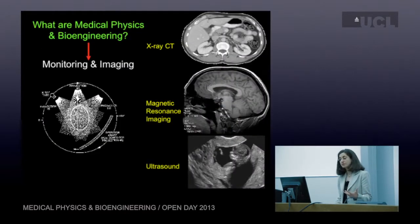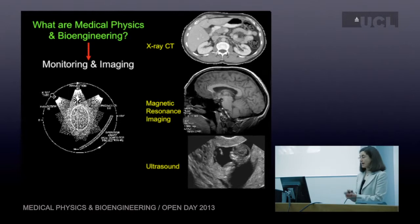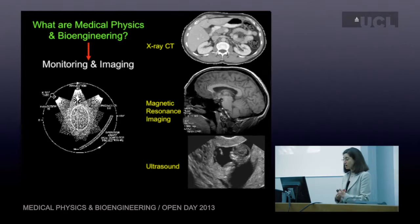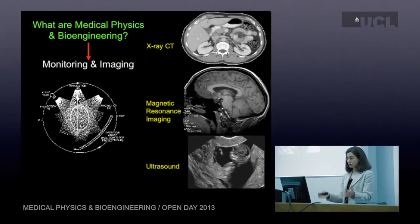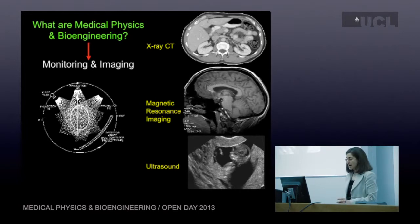Medical physics and bioengineering involves a lot of monitoring and imaging. That includes techniques like x-ray CT, magnetic resonance imaging — which is what I do — and ultrasound. There's also a diagram here explaining how a CT scanner works: you've got an x-ray source that moves around and a detector array that picks up the transmitted x-rays.